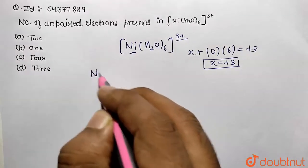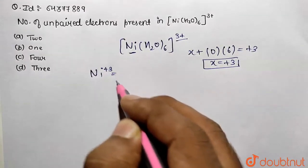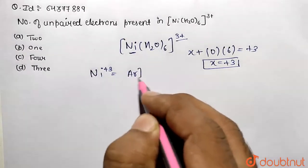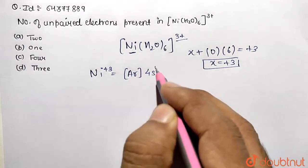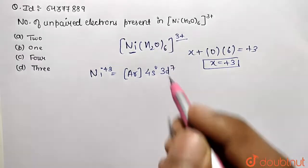So can I represent nickel plus 3 configuration? Yeah that's going to be very simple. Argon ground state configuration is 4s² 3d⁸ but after ionization it's going to be 4s⁰ and we are left with 3d⁷ only.